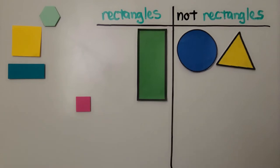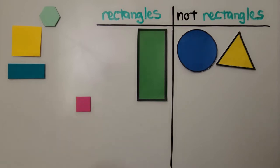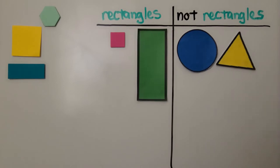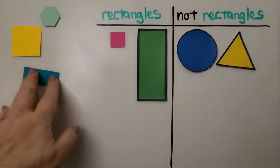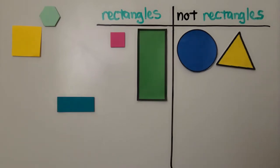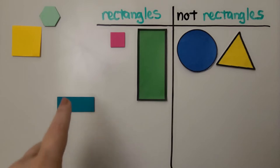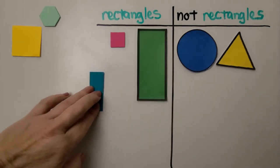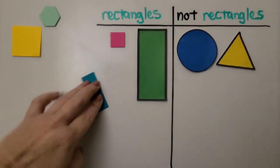Is this a rectangle? Does it have four square corners? I see one, two, three, four square corners. So yes, that is a rectangle. It's a square and it's also a rectangle. Is this a rectangle? I see four square corners and four straight sides. It actually looks like this one if we turn it — just a smaller one.